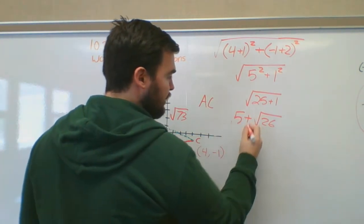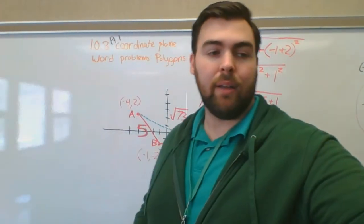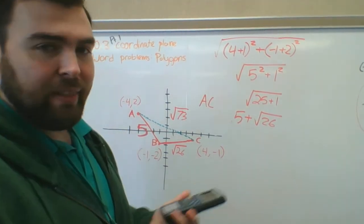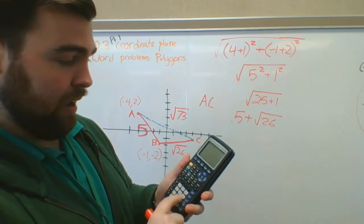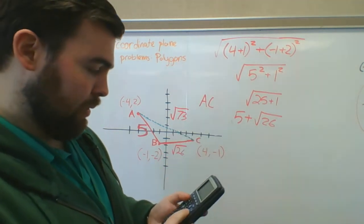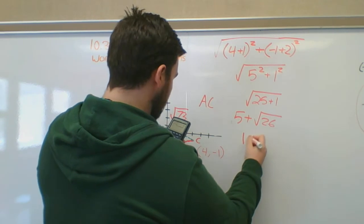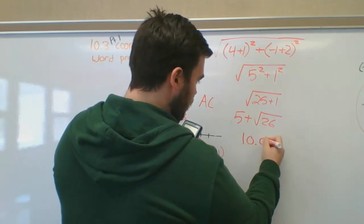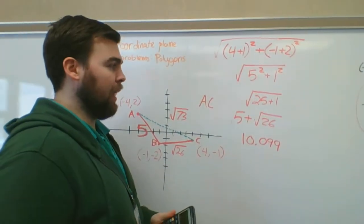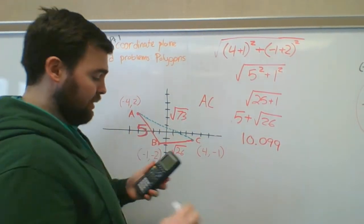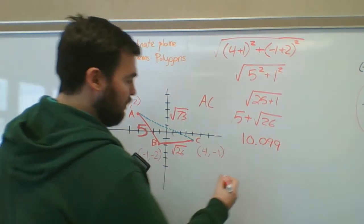So the total distance A to B to C is 5 + √26. You'll need a calculator here. That works out to about 10.099. And AC = √73, which is about 8.544.